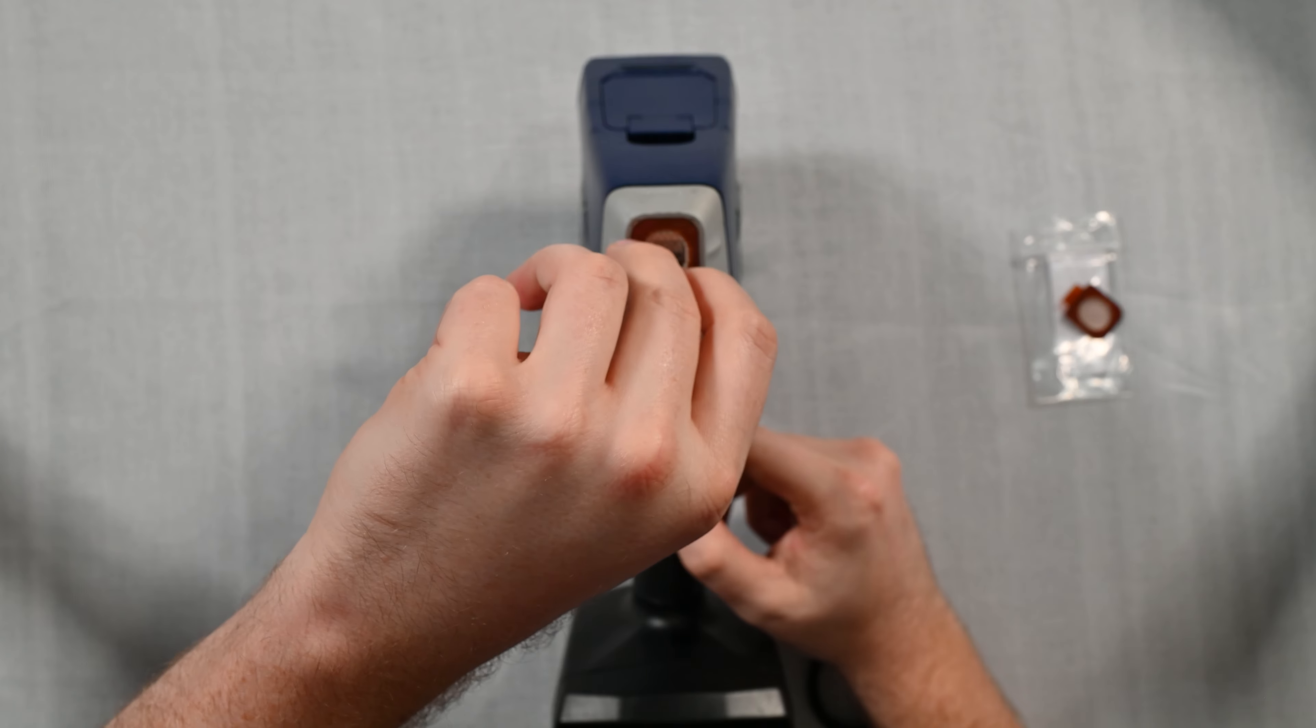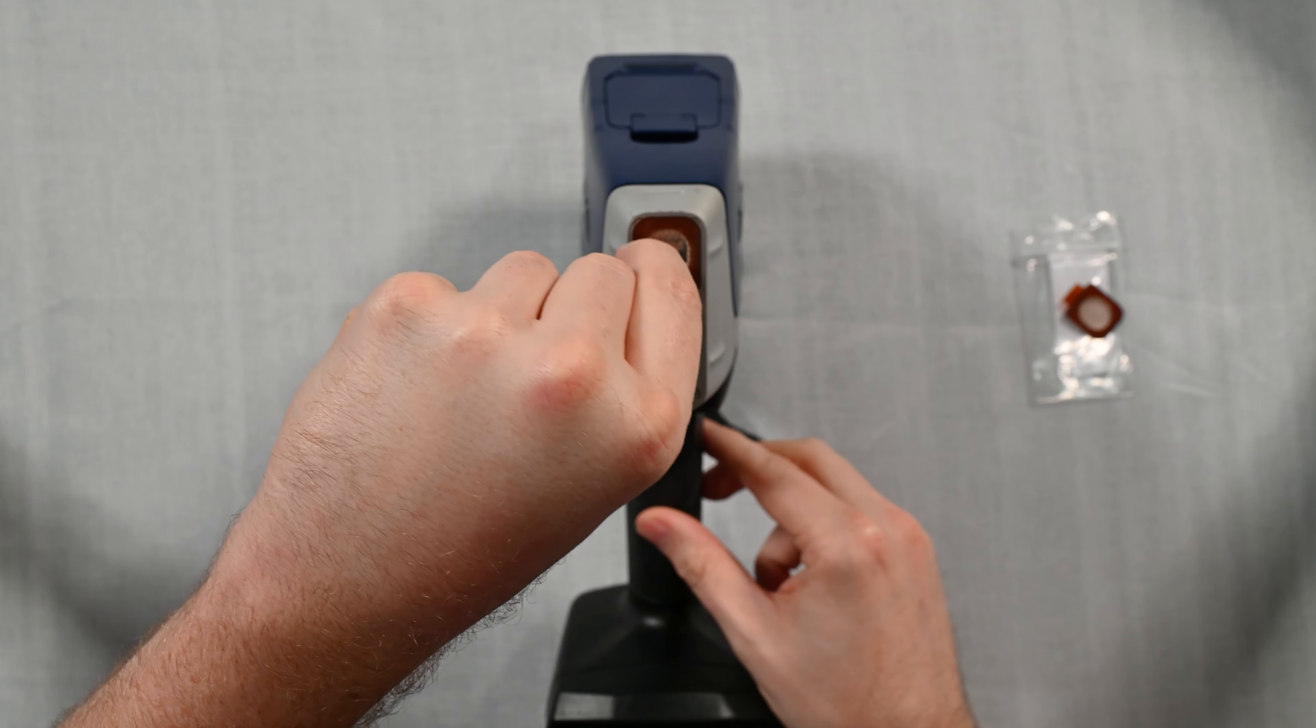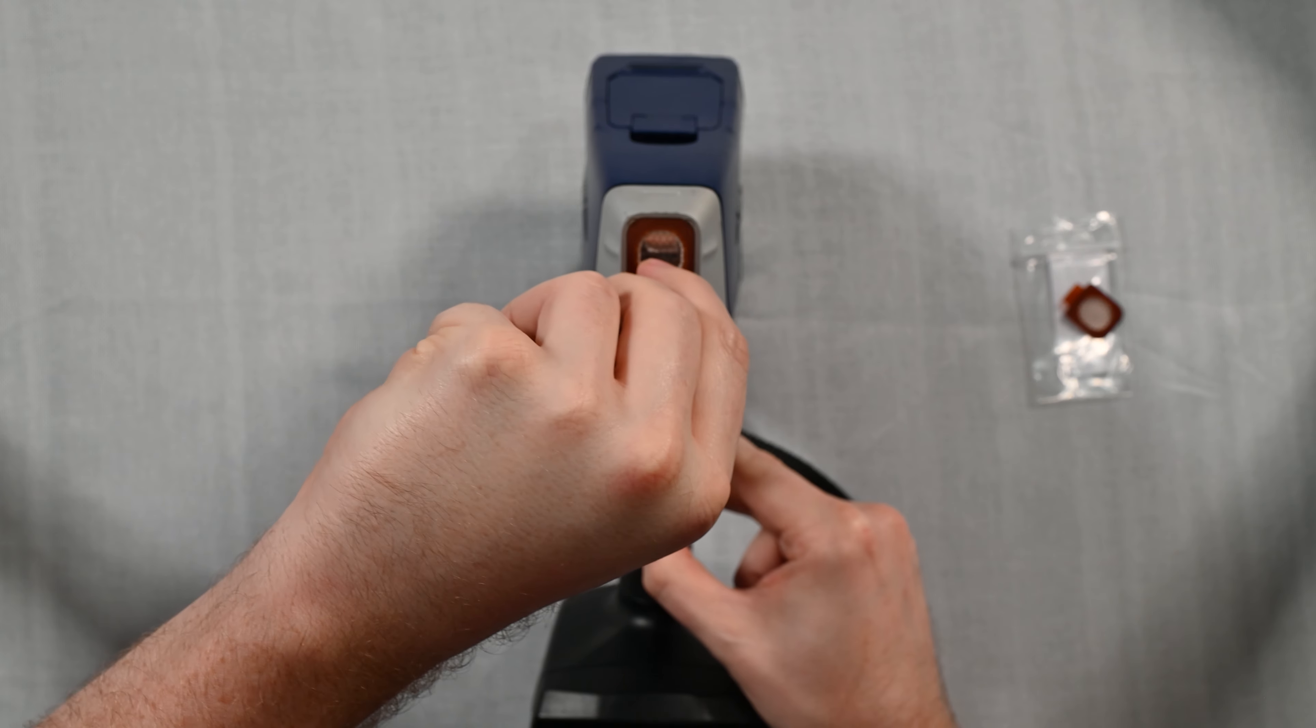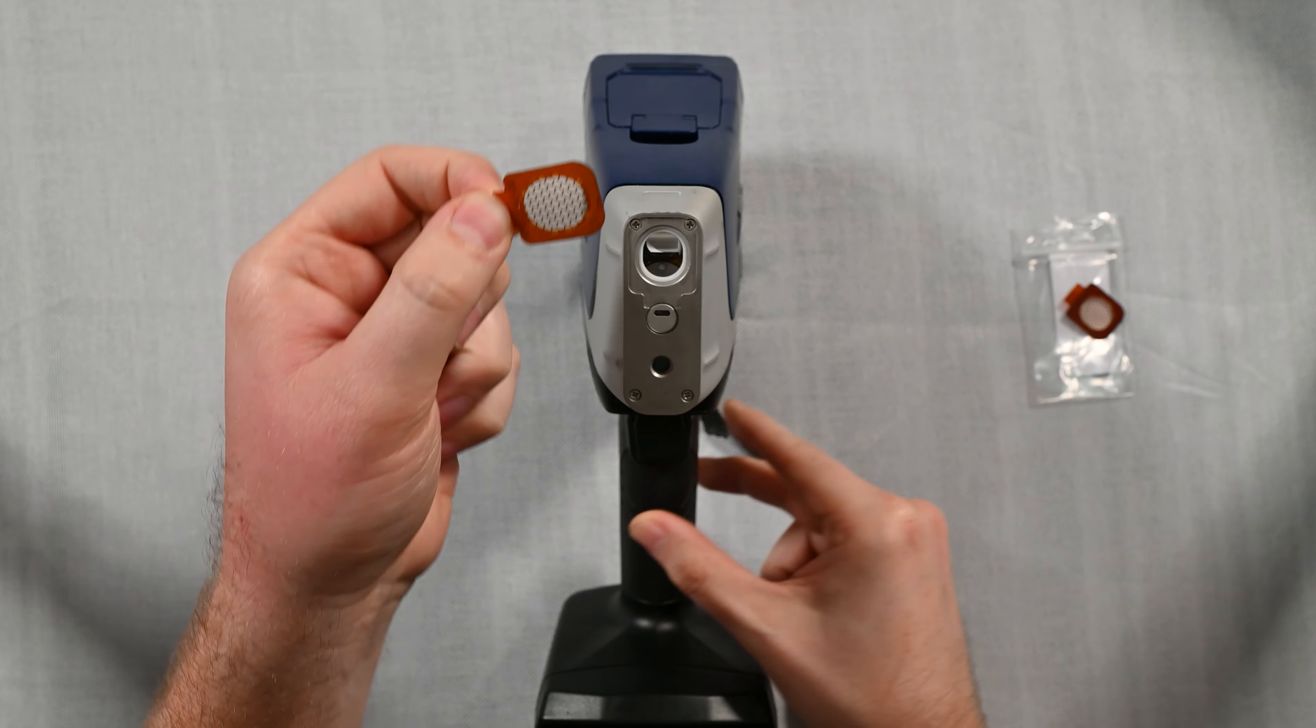All we do is there's a little pull tab on the bottom here. So I'm going to put my fingernail under that pull tab and I'm going to pull the window off. It's just stuck on there with a little adhesive.